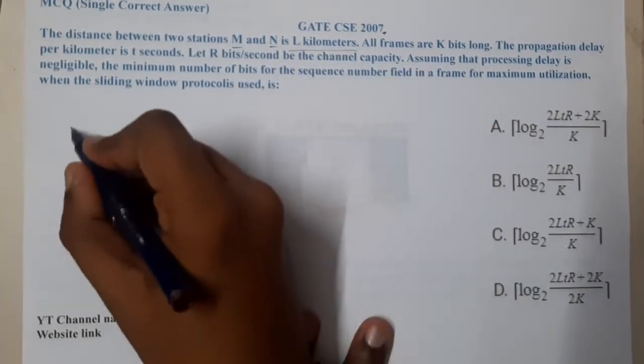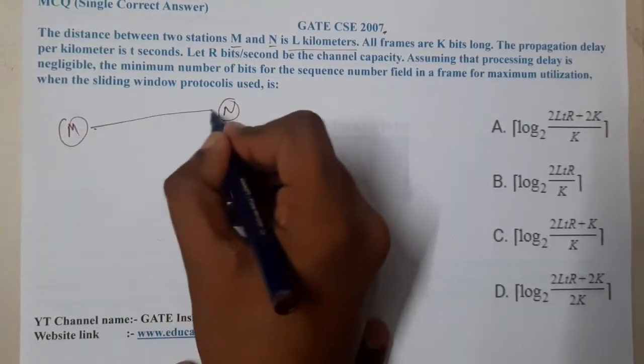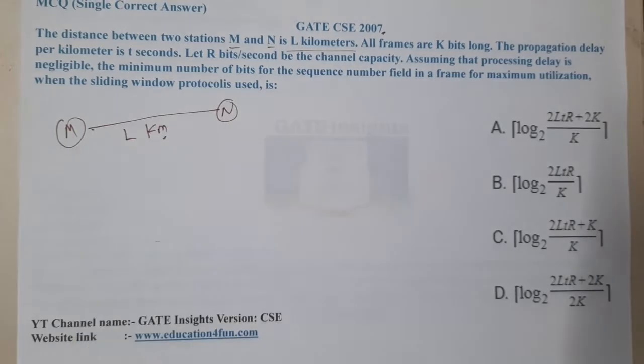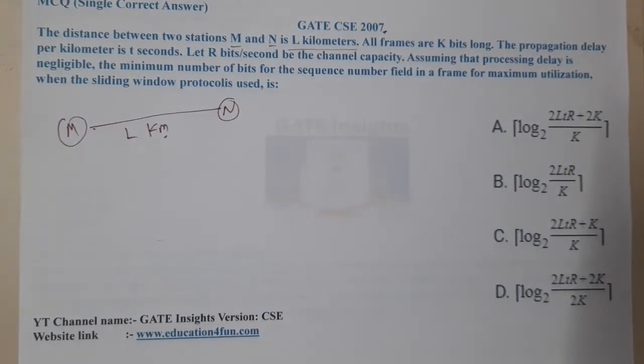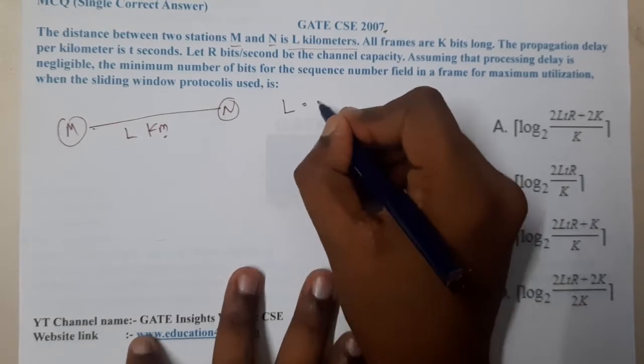The given question is: the distance between two stations M and N is L kilometers. There are two stations M and N, the distance is L kilometers. Always write the units carefully.